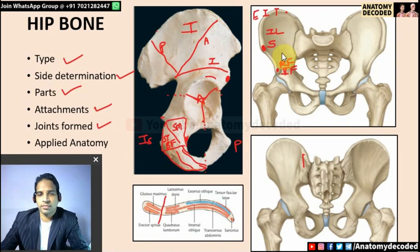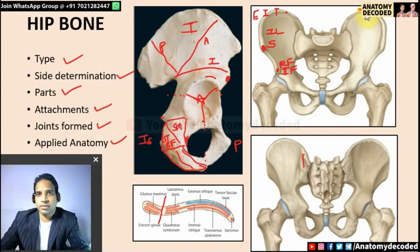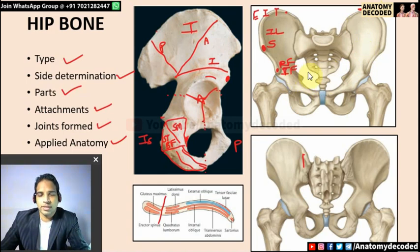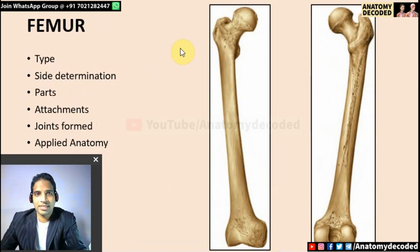Joints formed by the hip bone: the acetabulum articulates with the head of femur — a ball and socket variety of synovial joint. The sacroiliac joint is a plain variety of synovial joint. The symphysis pubis is a secondary cartilaginous joint. For applied anatomy: the highest point of the iliac crest lies between L3 and L4, used for identifying the lumbar puncture space. The hip bone has great value in sex determination in forensics.